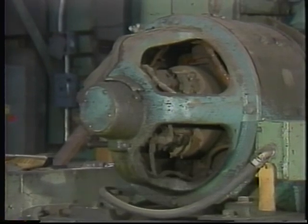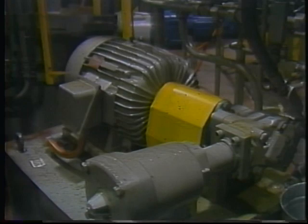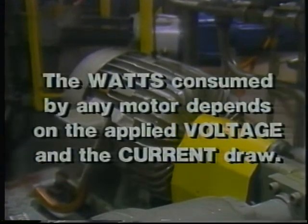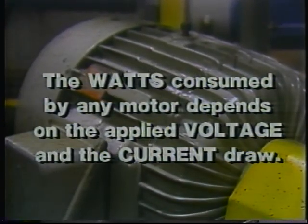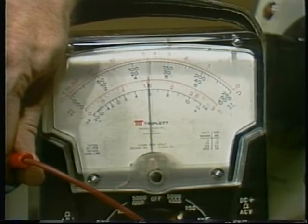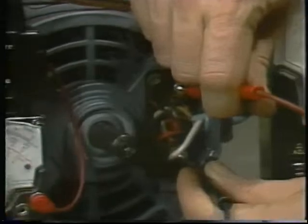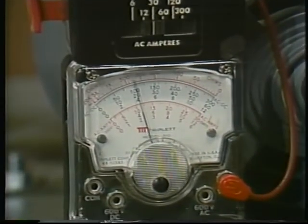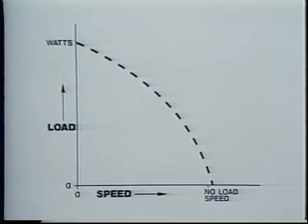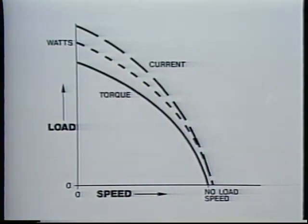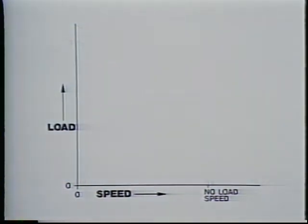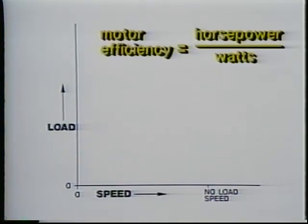When the power is AC, the relationship is a little more complicated, but the watts consumed by a motor always depend directly on the voltage applied and the current it draws from the line. Most motors operate at a fixed line voltage, which means that the watts into a motor depend largely on the current. If we plot watts of power consumed against motor speed, the curve looks like the current curve — or the torque curve — since the torque a motor exerts to drive its load depends on the current.